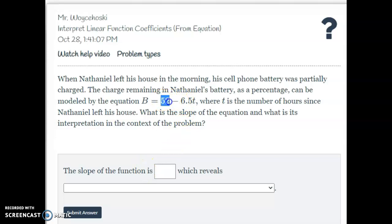So the y-intercept is 52 in this one. The slope I can tell is 6.5. But because it's minusing it, we know that we're losing 6.5 of something every hour. In this case it looks like the charge on his battery is a percentage, so it looks like we're losing 6.5% every hour. And so it says the slope of this function is negative 6.5. And that's going to tell us, I'm going to look at something that talks about I'm losing something for every hour.